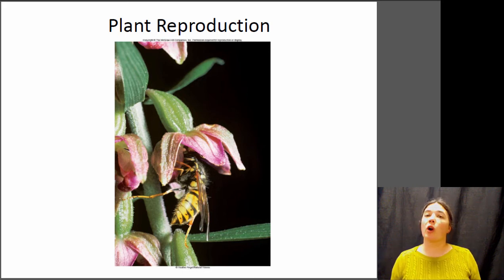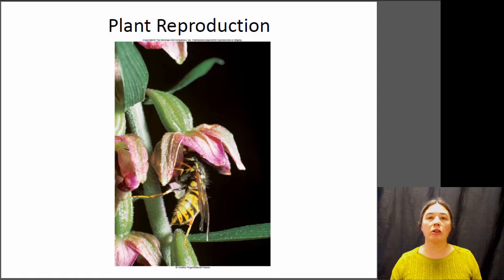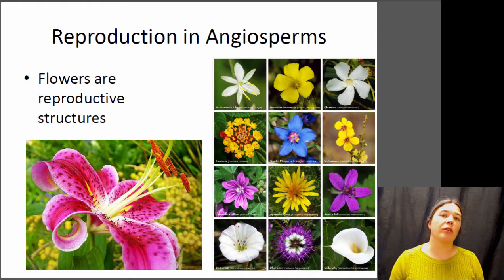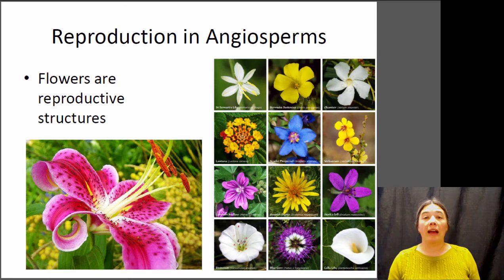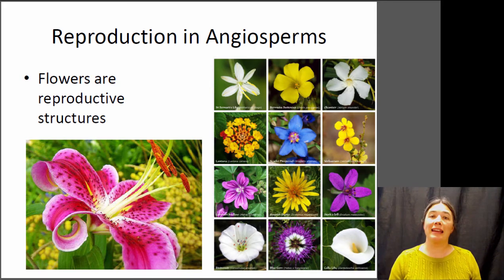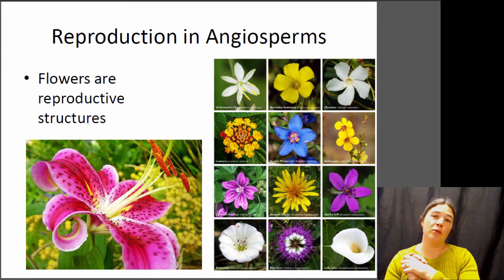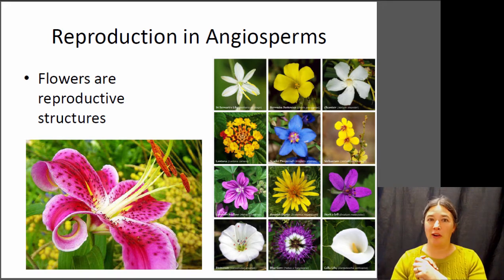Hi, this is Dr. Claire, and this is our lecture on plant reproduction. In particular, in this lecture we are going to be focusing on reproduction in angiosperms. Angiosperms are the flowering plants, and the reproductive structure in the angiosperm is the flower. So when somebody gives you a bouquet of flowers, they're basically giving you a lovely bouquet of plant genitalia.